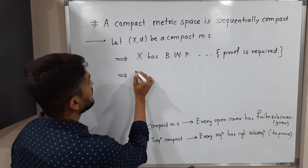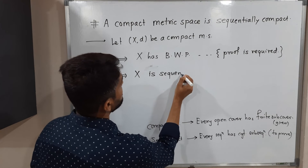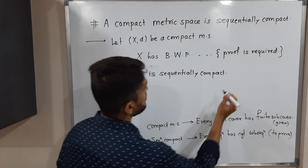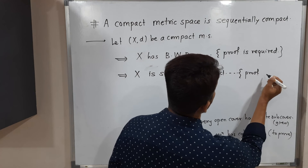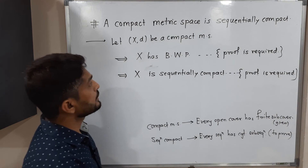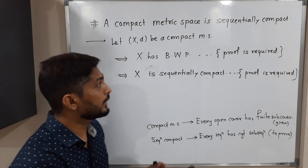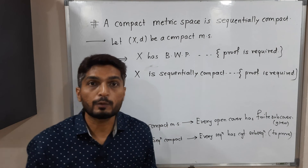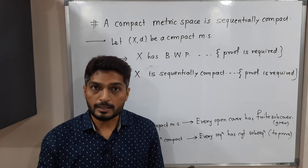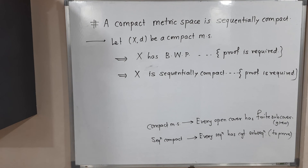So this directly implies X is sequentially compact. This thing also we have done in our videos, so the proof is required — you should write that proof here. In this way we started with a compact metric space and finally we got it is sequentially compact. We simply have to add these two proofs, and we will have the required proof of this theorem. The proofs of these two results I am going to add in the description, so you can watch those videos and complete the proof. We will stop here — thank you, meet you in the next lecture.